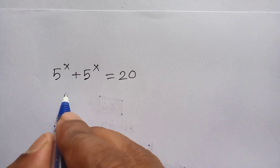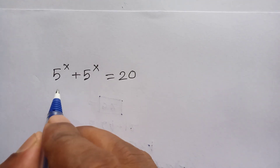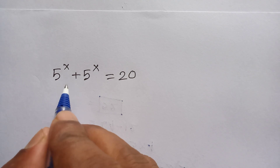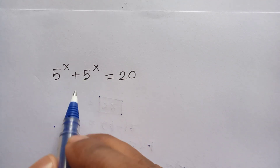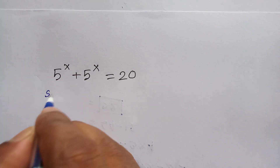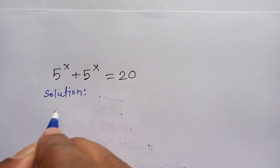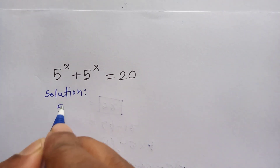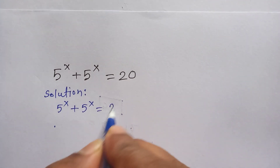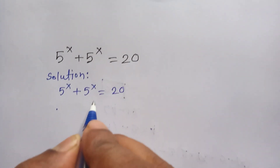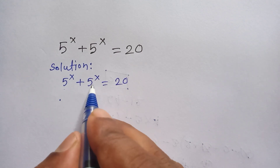Hi everyone, welcome back to my channel A Plus B. In this video I am going to show how to find the value of X easily. The solution: we have given 5 to the 4X plus 5 to the 4X is equal to 20. This one 5 to the 4X and this one 5 to the 4X are the same.